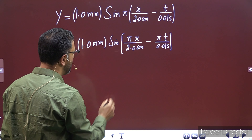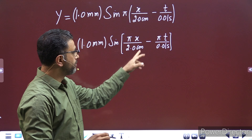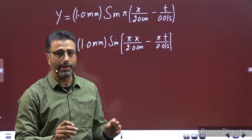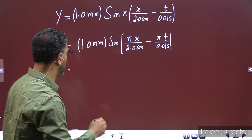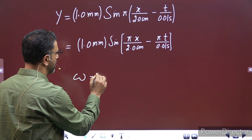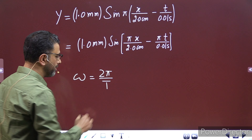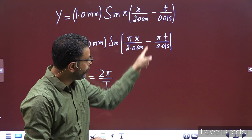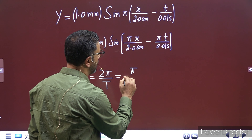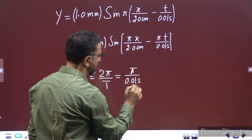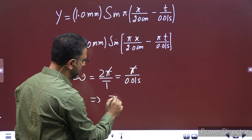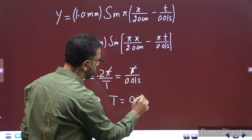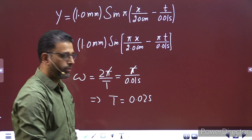वो यहीं पर देख लेते हैं। t का जो coefficient है वो angular frequency होती है — omega। Angular frequency omega जो होता है 2π divided by T, T is the time period। और यहाँ पर t का coefficient है pi divided by 0.01 seconds। Pi and pi cancels out, so T is equal to 2 × 0.01 = 0.02 seconds।